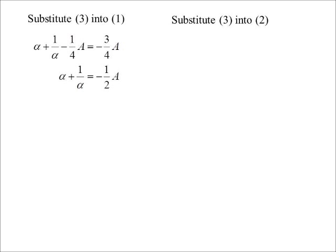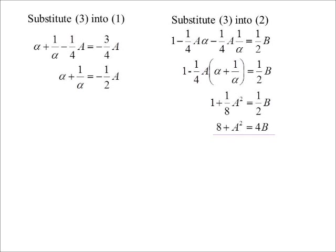Now, if I substitute it into the second one and eliminate beta from that one, a little bit more working, but then also substituting in for the alpha plus 1 on alpha that I get here and you can see eventually a bit of algebra we get there 8 plus A squared is indeed 4B. There's probably other ways of getting that but that's just one way of manipulating it.